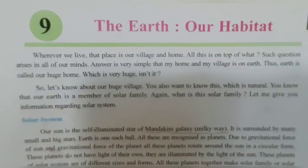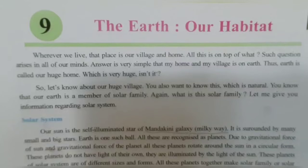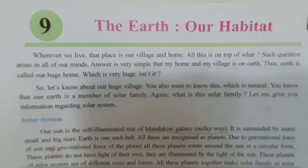Question number 2: What is meant by latitude and longitude? The horizontal imaginary lines drawn on the earth's surface are called latitudes. The vertical imaginary lines drawn on the earth's surface are called longitudes. Both imaginary lines are drawn on the globe of the earth.